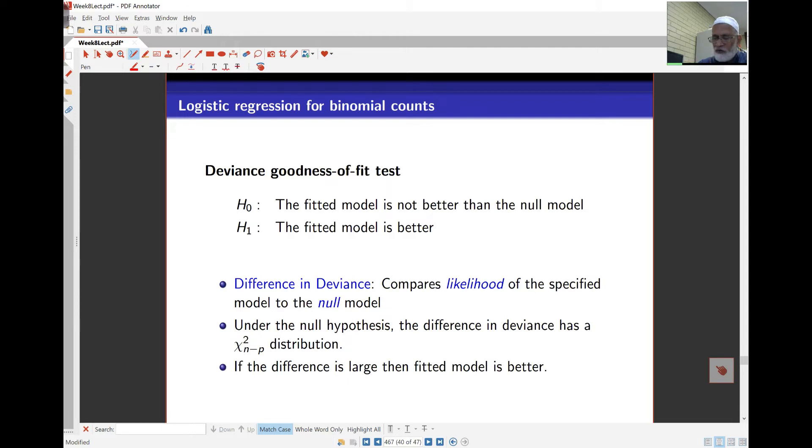As we saw earlier, we can take a look at a deviance goodness-of-fit or deviance hypothesis test. H0 is the fitted model is not better than the null model, and H1 is the fitted model is better. The difference in deviance or the drop in deviance compares the likelihood of the two particular models, of the specified model to the null model. Under the null hypothesis, the drop in deviance, or the difference in deviance, is approximately a chi-square distribution. And of course if the difference is larger, then the p-value becomes smaller.